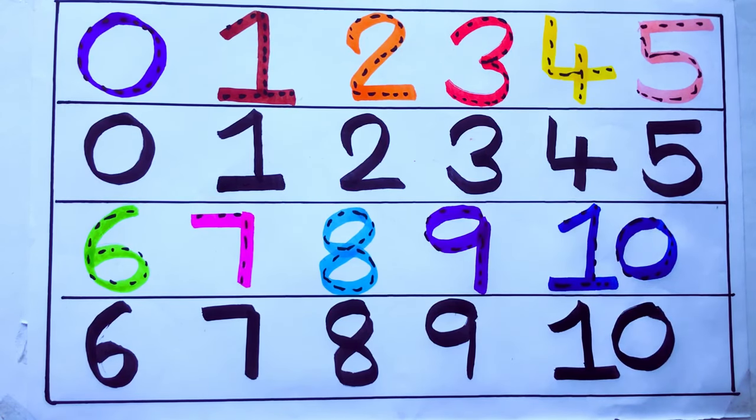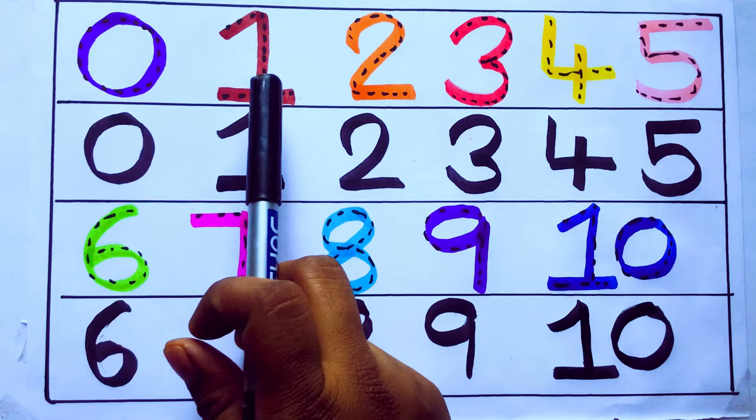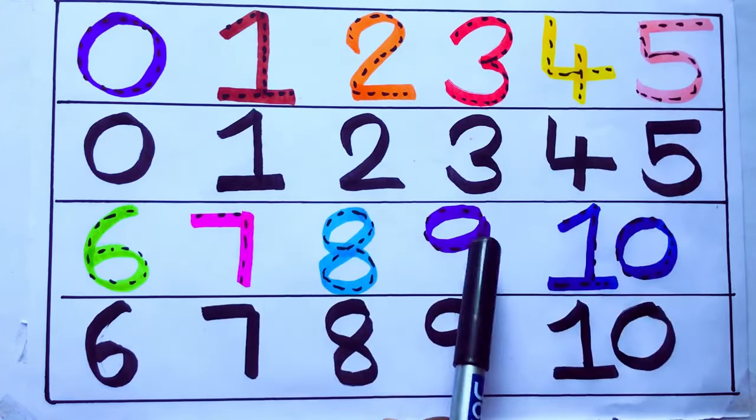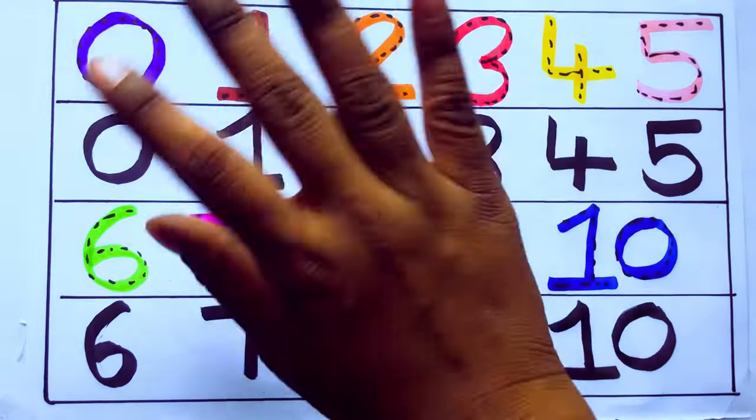Once again, learning numbers: 0, 1, 2, 3, 4, 5, 6, 7, 8, 9, 10. Okay, bye kids.